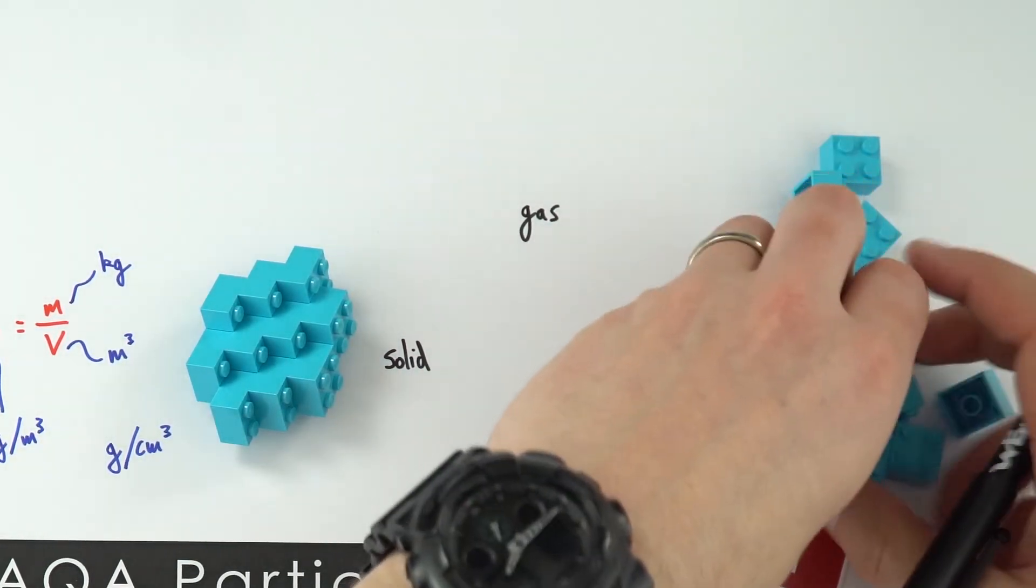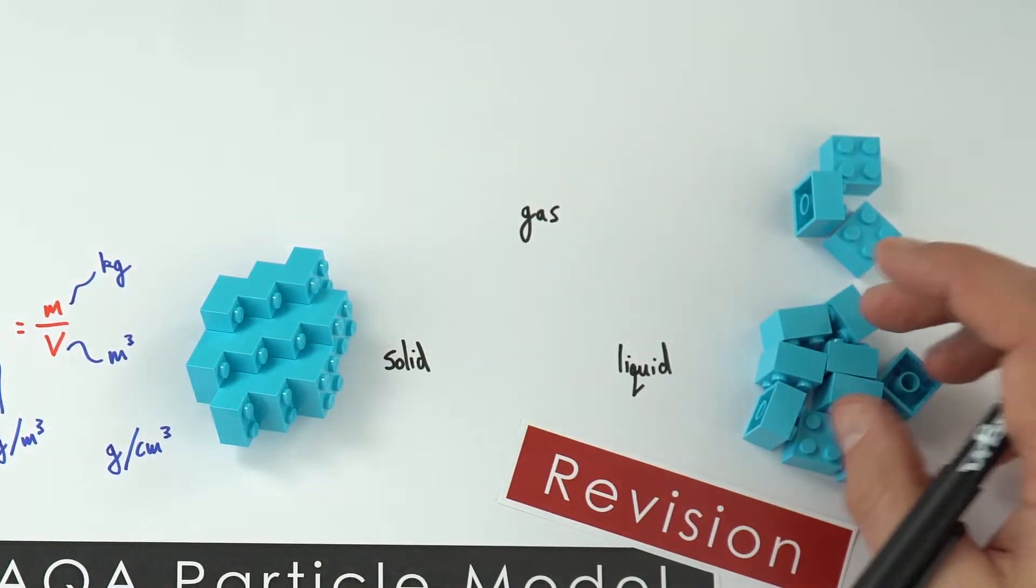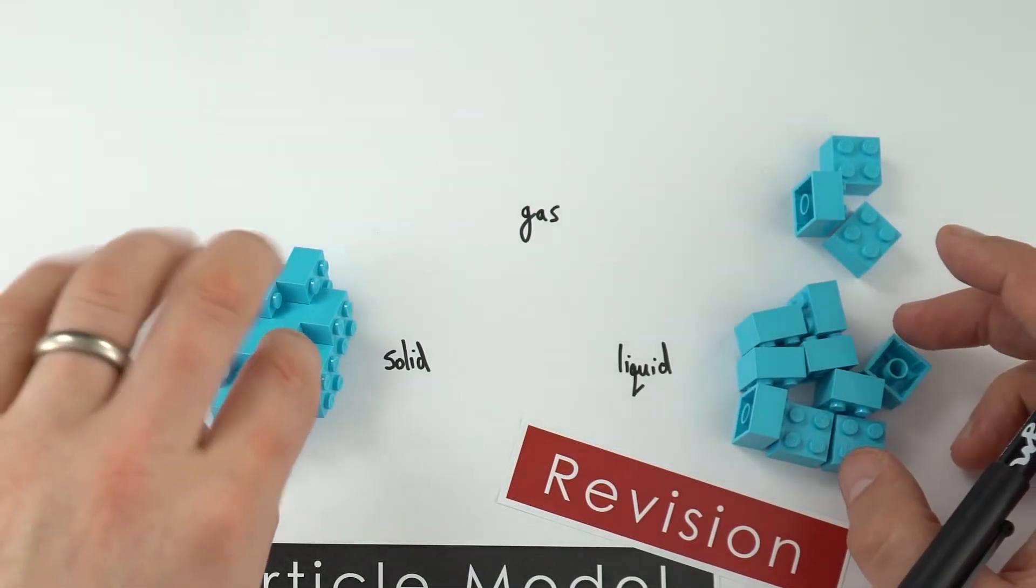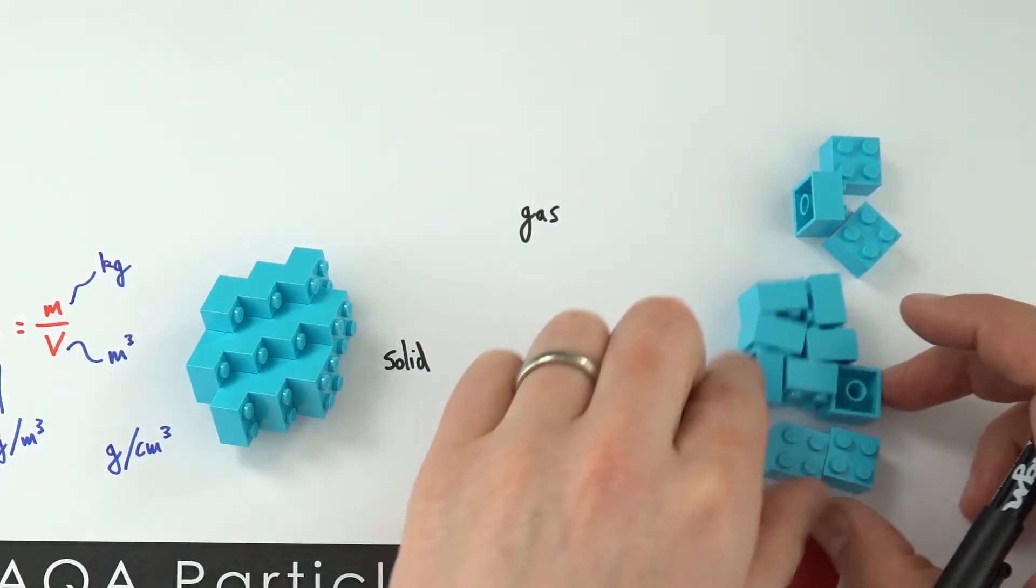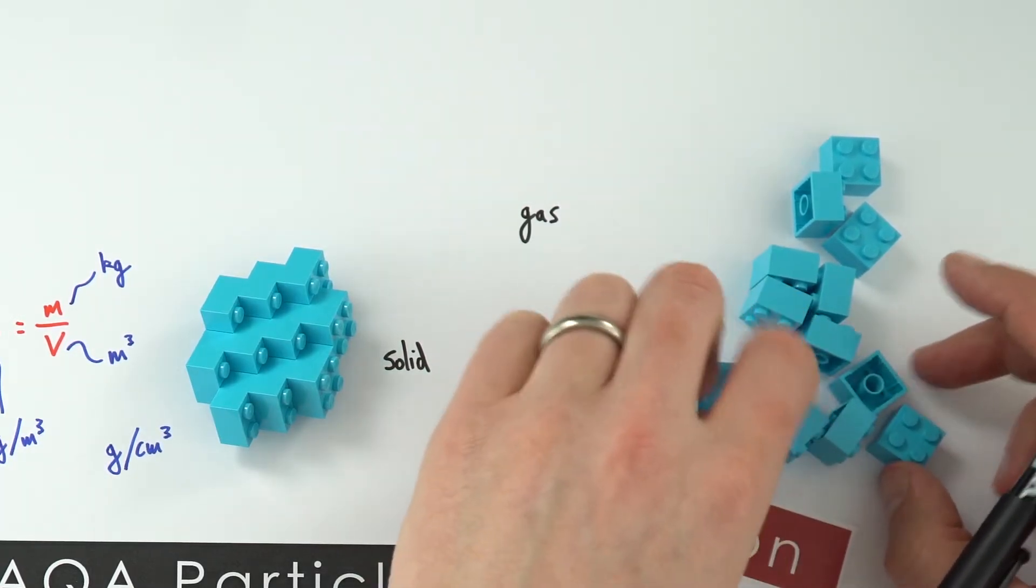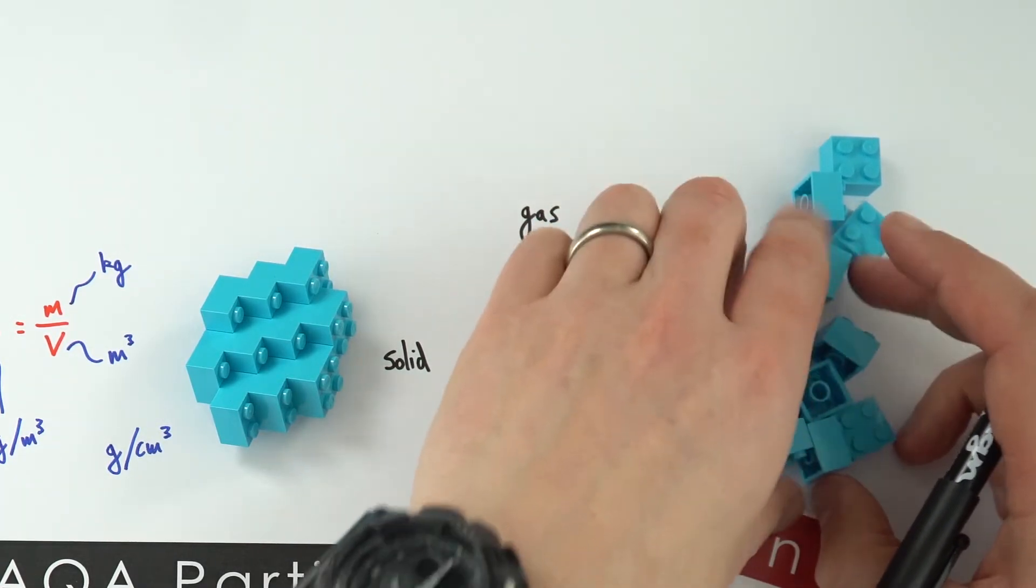A liquid, on the other hand, has particles that are still really densely packed together, probably a similar density to in a solid, but here they're able to move past each other. What we have is this random motion of all the particles in a liquid.